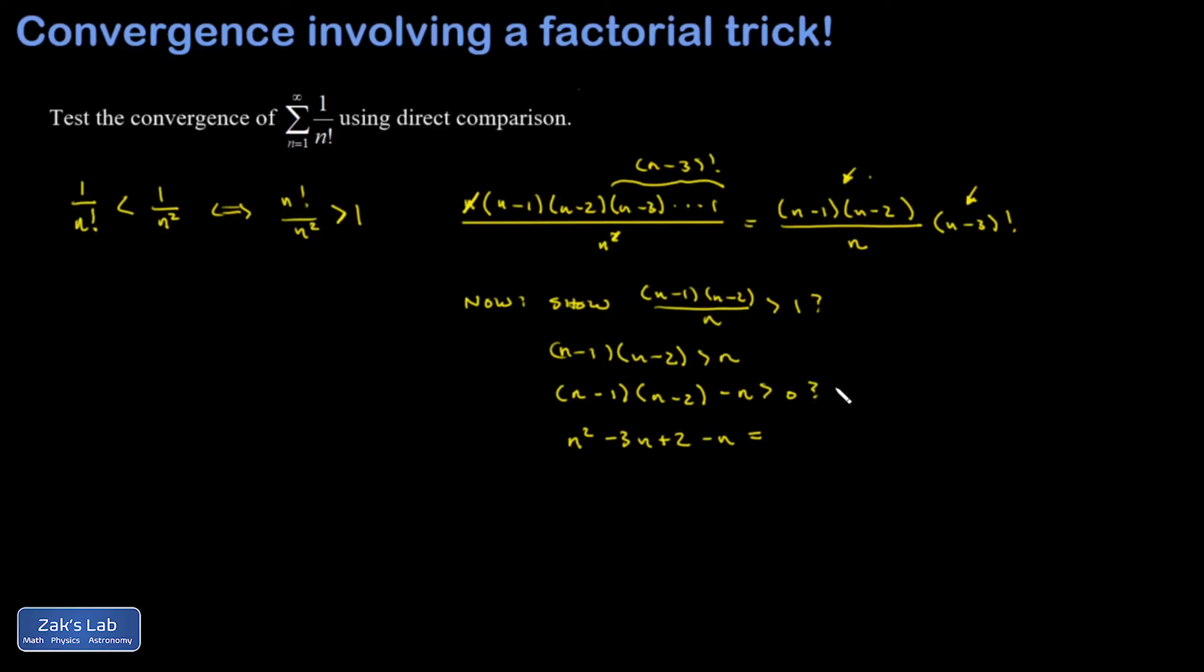Again, we don't know it's bigger than 0 yet. We're trying to prove it. I get n squared minus 4n plus 2, but that's n times n minus 4 plus 2.